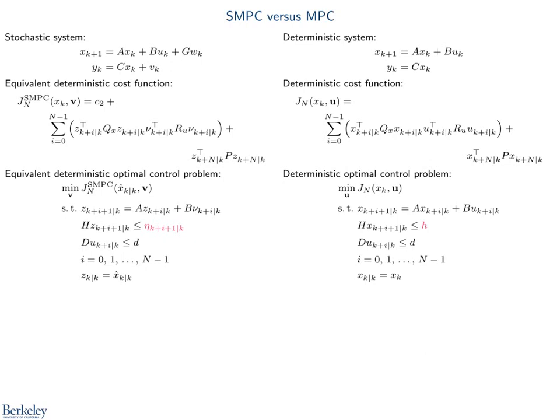In the paper, we discuss how to determine the modified right-hand side, or the constraint back-off, which is generally done offline. In other words, stochastic MPC is nothing but a slight modification of standard MPC.